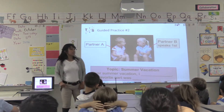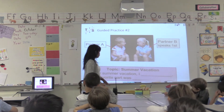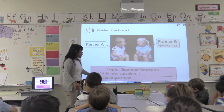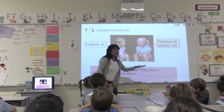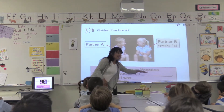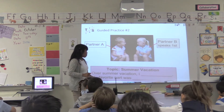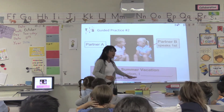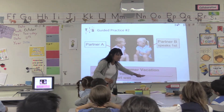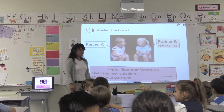Okay, hands down. This time partner B is going to go first. Say 'On summer vacation I...' and 'My favorite part was...' — go ahead, partner B, you go first this time.